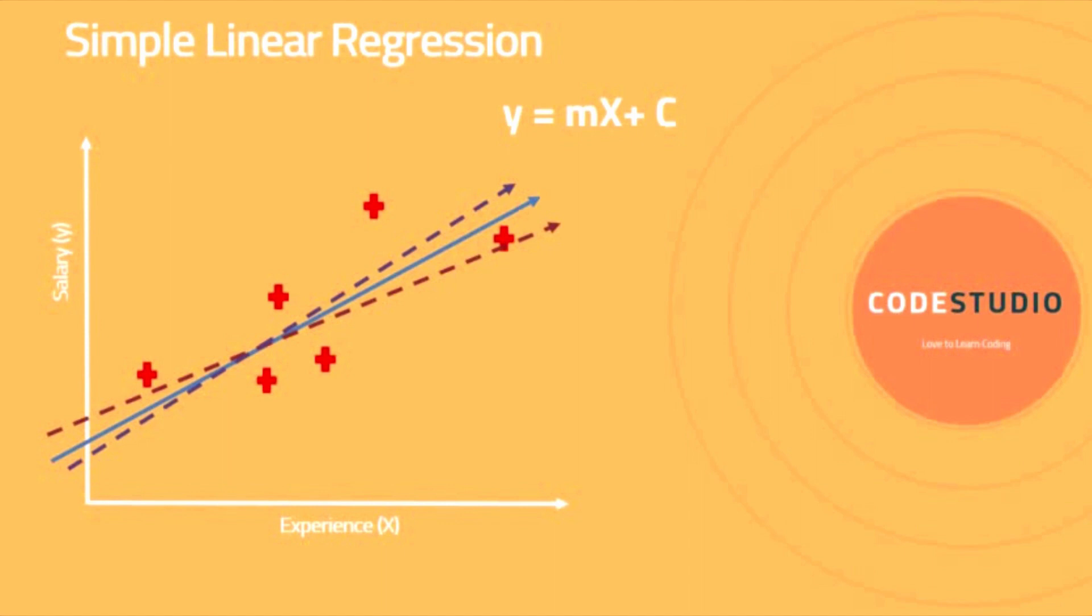When you implement a linear regression model, the model will try to draw a best fit line like the blue line. Based on the best fit line, m and c—the coefficient and constant values—will be derived. Now the question is, how will the model draw a best fit line?